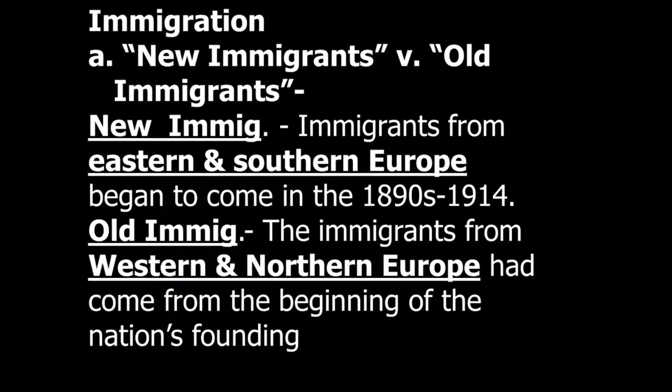We have to know who the new immigrants are versus the old immigrants. New immigrants are from Eastern and Southern Europe — the old Soviet bloc countries: Italians, Russians, Hungarians, Slavic countries. Old immigrants are from Western and Northern Europe — the traditional immigrants like Irish, English, some German. If you've ever seen the movie Gangs of New York, that's what we're talking about. These are from England, Ireland, Scotland, and similar places connected to the English world.